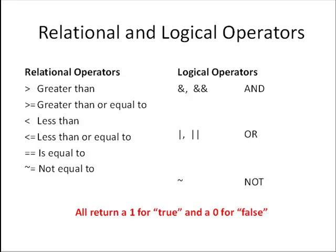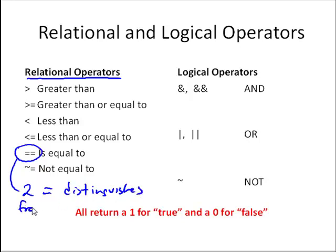Let's summarize the relational and logical operators. We've looked at all of the relational operators: greater than, greater than or equal to, less than, less than or equal to, is equal to. Note the double equal sign distinguishes this from the assignment operator. And then not equal to is the last one. We also have three logical operators we can use.